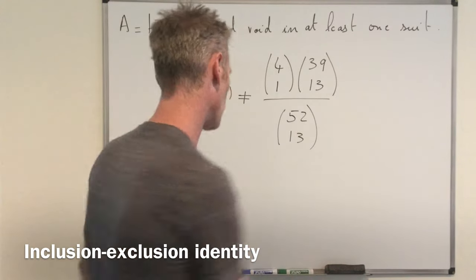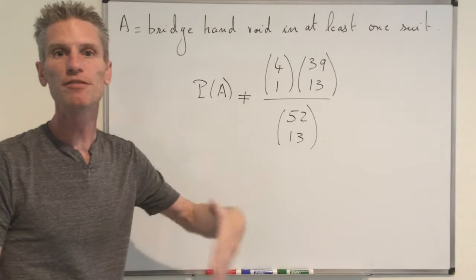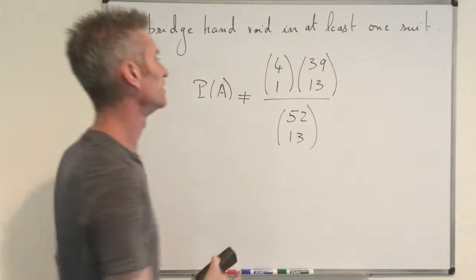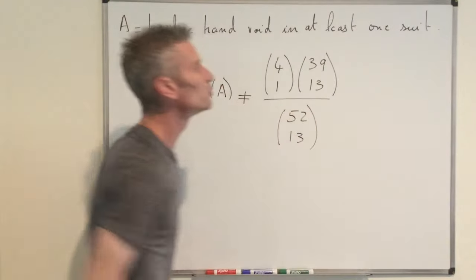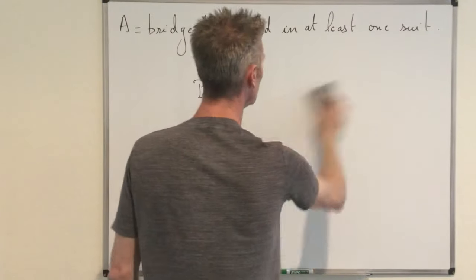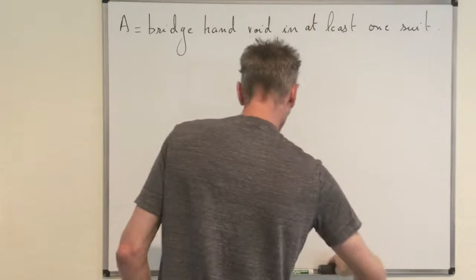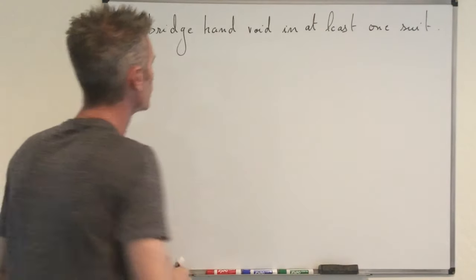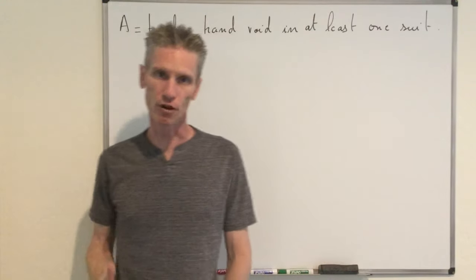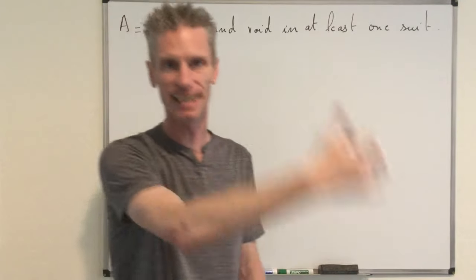This first term will appear in the inclusion-exclusion expression, but we need correction terms looking at bridge hands void in two or three suits. The natural approach is to express the event A as a union of four events, one corresponding to each suit being void.